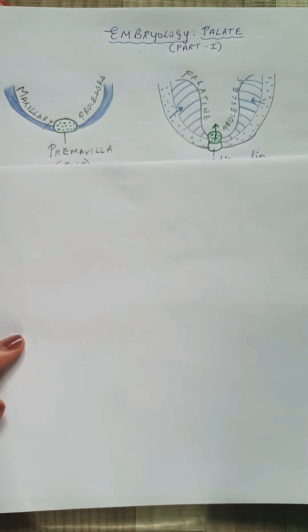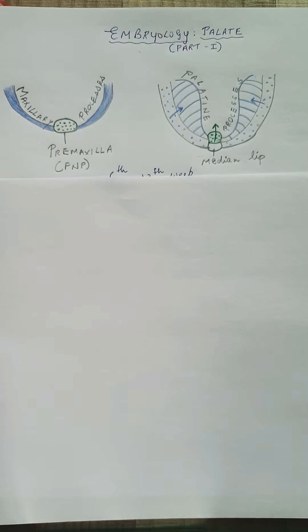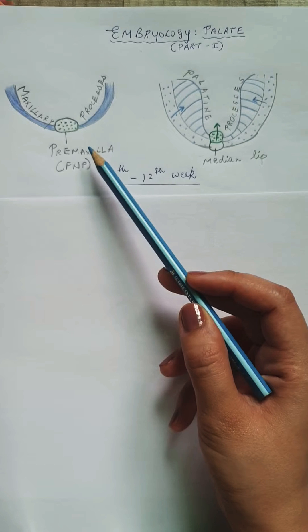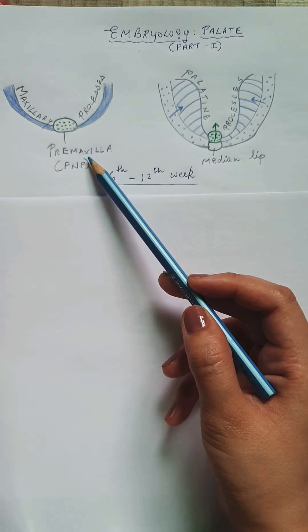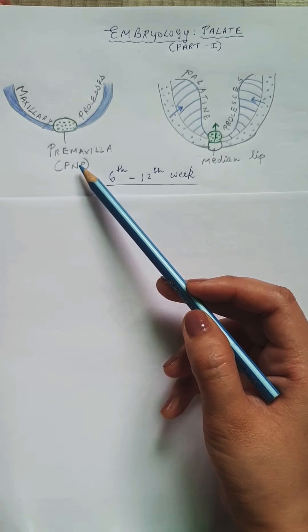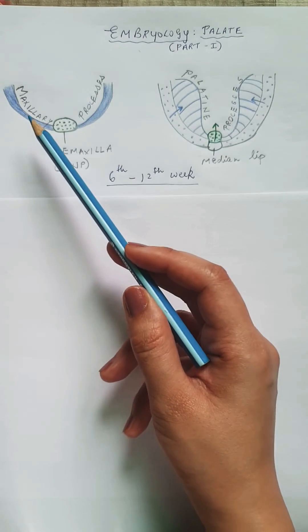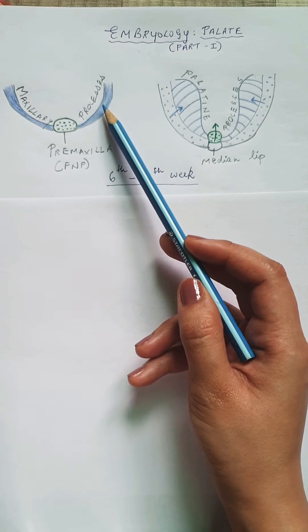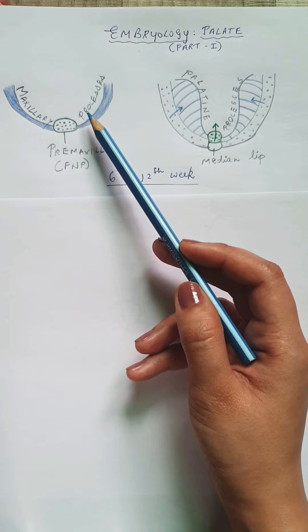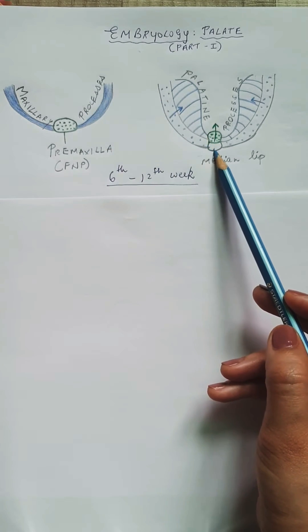For the palate, this is also an ongoing process like the development of the lip that we had discussed. During the sixth to twelfth week of gestation, the process starts. It begins with the pre-maxilla, which is considered to be the center for growth of the palate. This pre-maxilla comes from the frontonasal process, seen in previous videos, and the maxillary processes, which come from the first pharyngeal arch, also take part in palate formation.